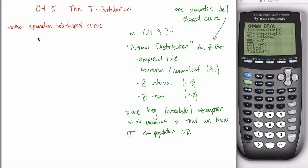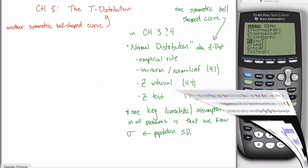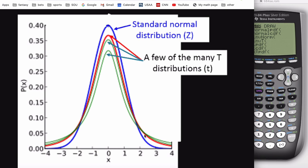A much more realistic scenario is if you don't know sigma. There's a downside: if you don't know sigma, you can't use the normal distribution anymore. Fortunately, there's another symmetric bell-shaped curve — or curves, since there are lots — called the t-distribution. Here's the logic: with the standard normal distribution, if I want to capture 95% of observations, I go up and down by two standard deviations. Our empirical rule says about 95% of observations lie within two standard deviations of the mean.